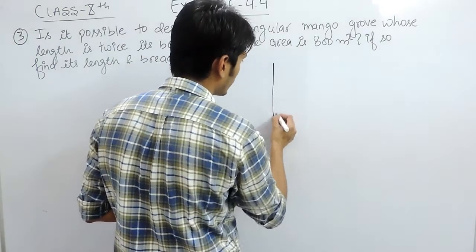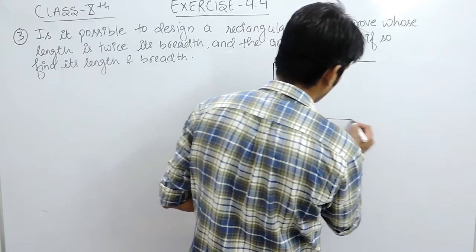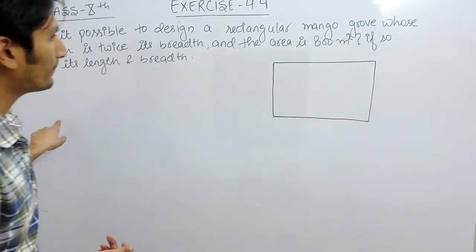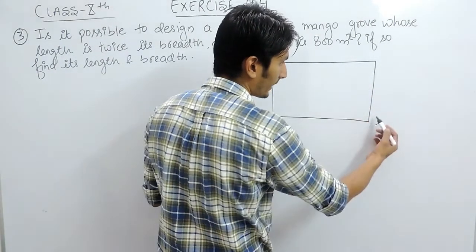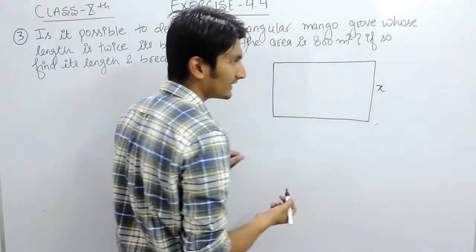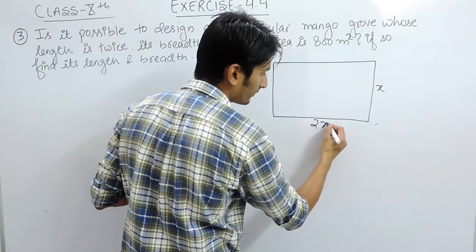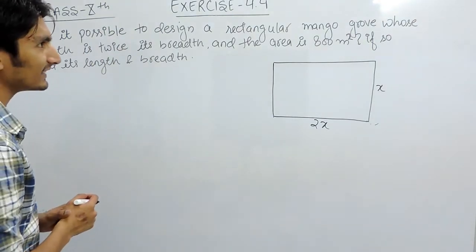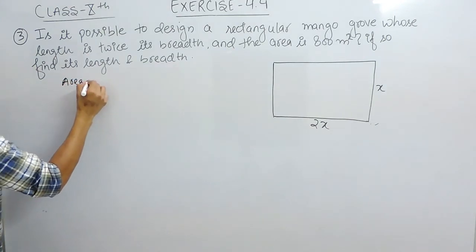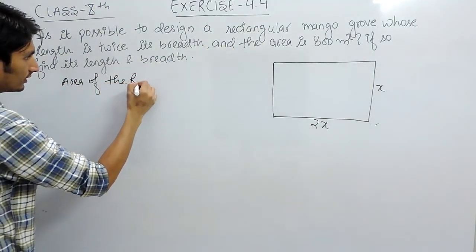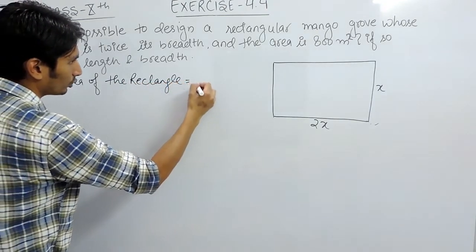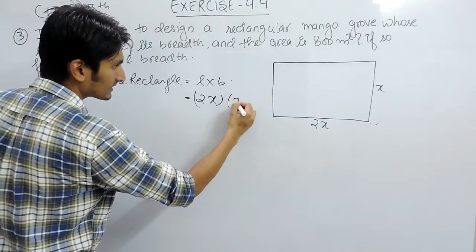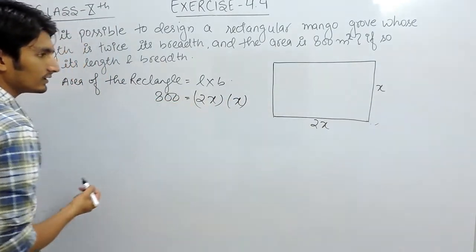In this question you have to check whether it is possible to form a rectangular grove whose length is twice its breadth. So if the breadth is x, clearly the length will be 2x. The area of this rectangular grove is given as 800 meter square, and the area of a rectangle is length into breadth, so the length is 2x and the breadth is x.